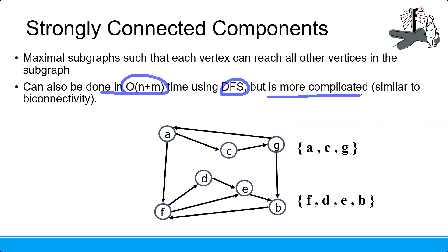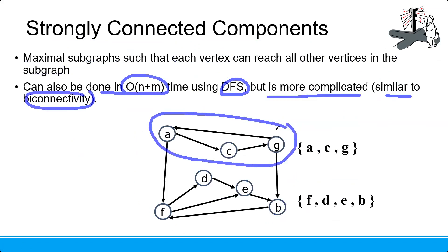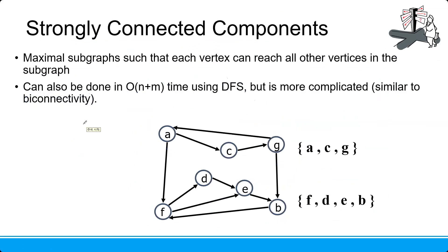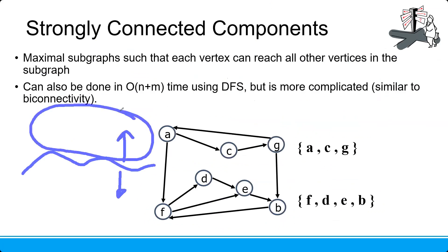This can also be done in O(n+m) using DFS, but it is more complicated. It is simpler for bi-connectivity. For example, I want to make a subgraph and find the strongly connected component on this tree. Think of it like a city — there will be an area above and an area below. You can find the strong connectivity component in each area and then link them.